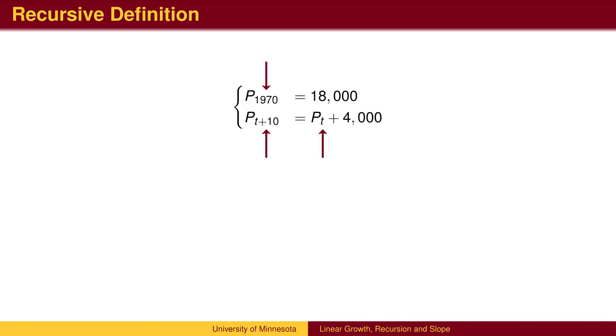The subscript tells us where we are in the sequence. In this example, we are measuring the population at various times, so the subscript is representing the year. P sub 1970 is the population in 1970.